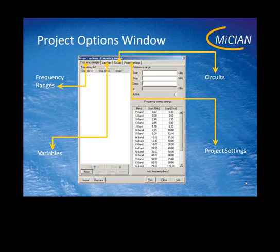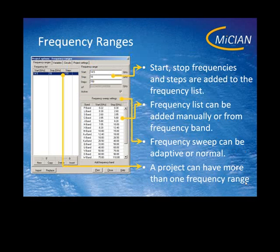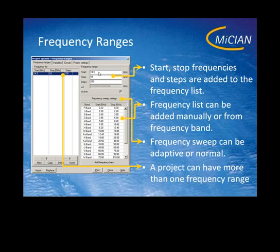First I'll explain the frequency ranges tab. It contains on the left side a list of frequency ranges. Each frequency range has a start frequency, a stop frequency and a number of steps. On the right side you can enter the values for each of those points — here you can see the start frequency at 14.5 GHz, the stop frequency at 18 GHz, and the number of steps to analyze is 150.